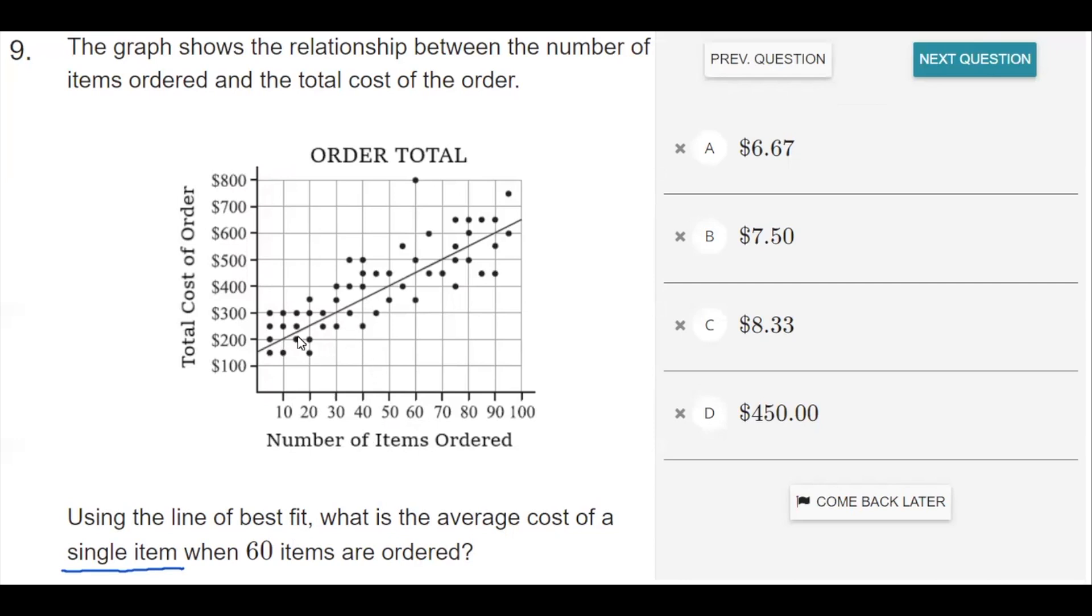So whenever we're given a scatter plot like this and it's asking us to use the line of best fit, they want us to use this line right here.